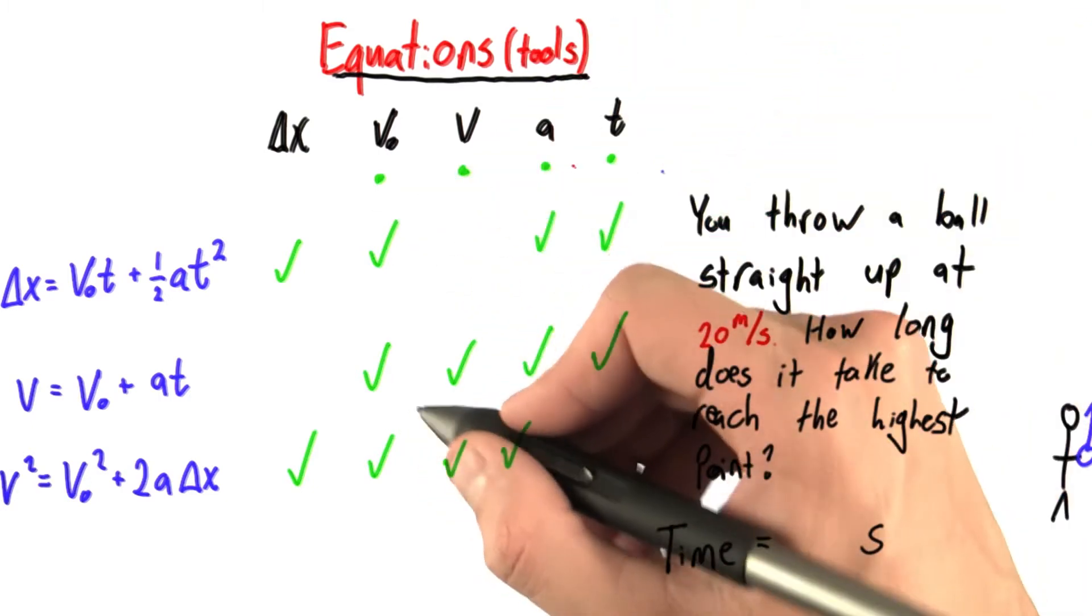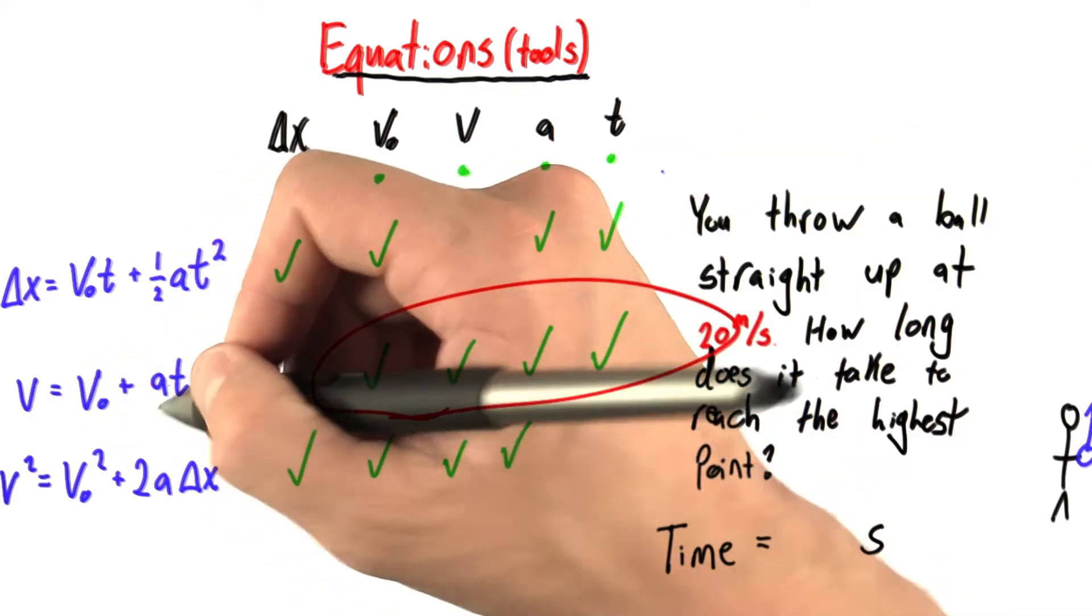Okay, these four variables correspond to this equation, v equals v0 plus at.